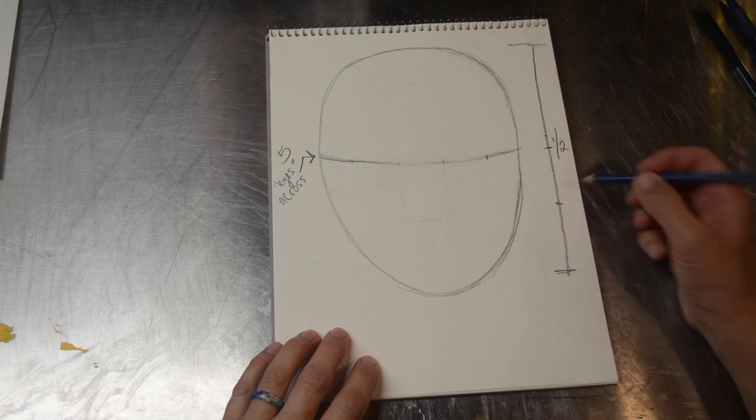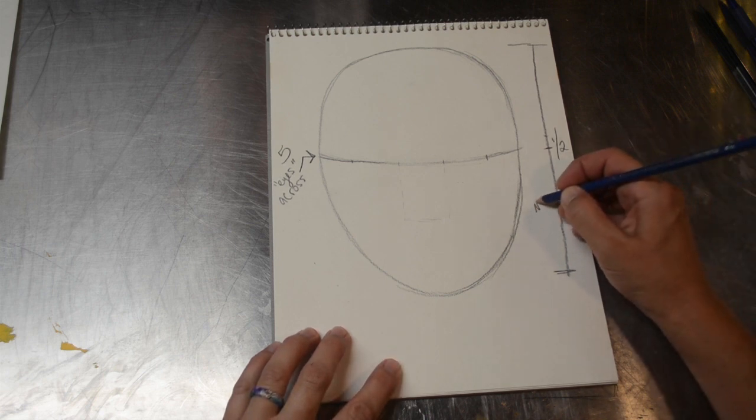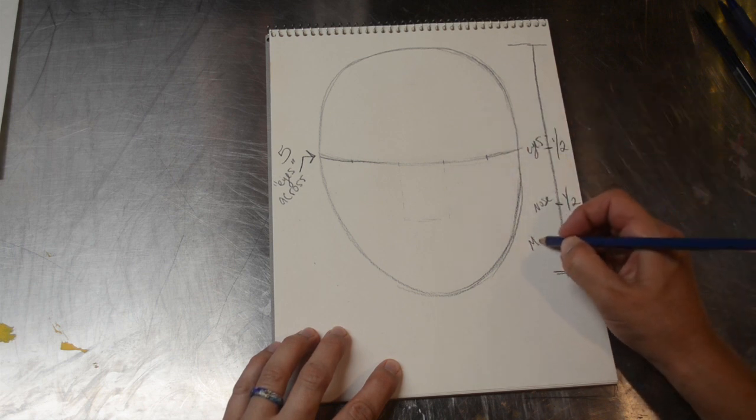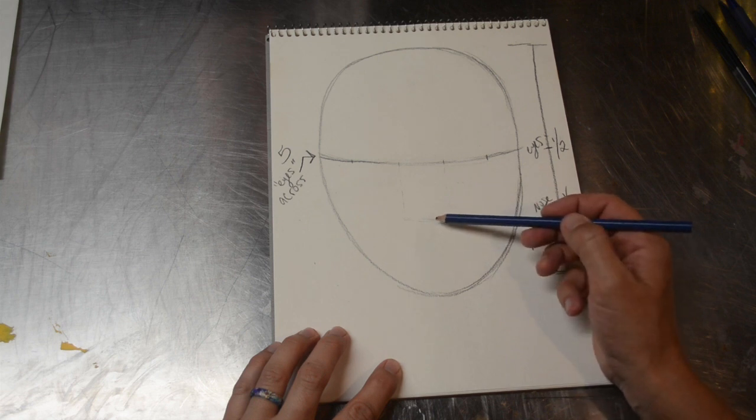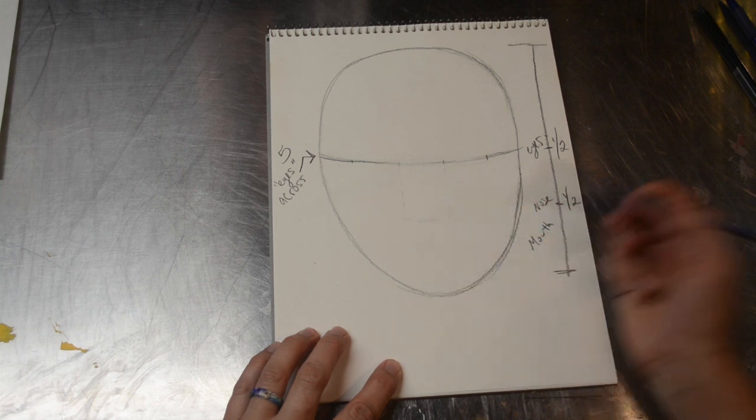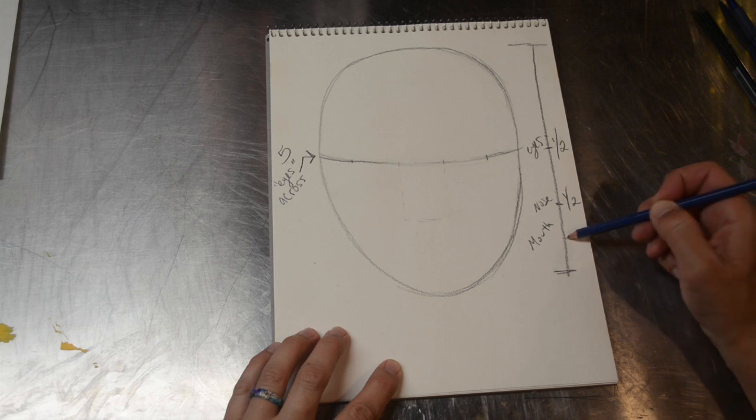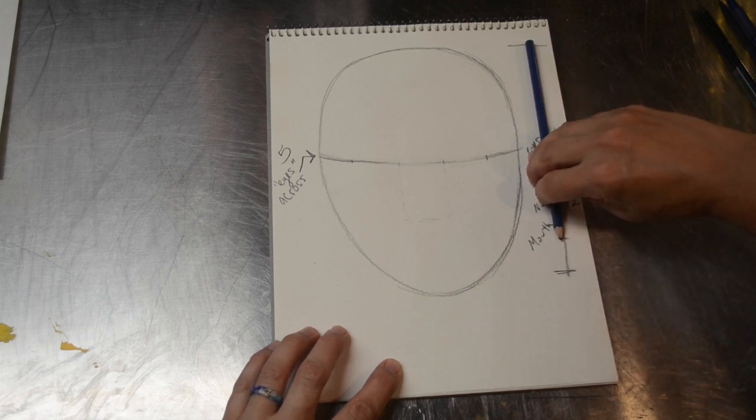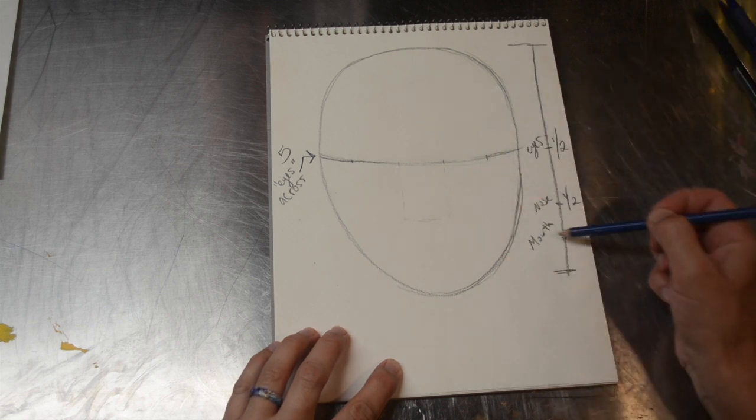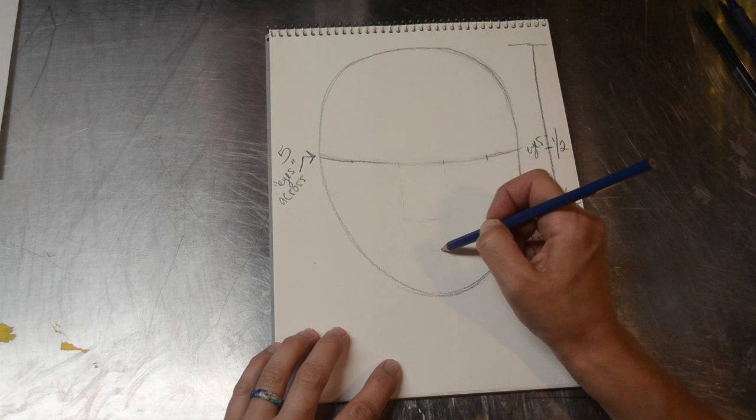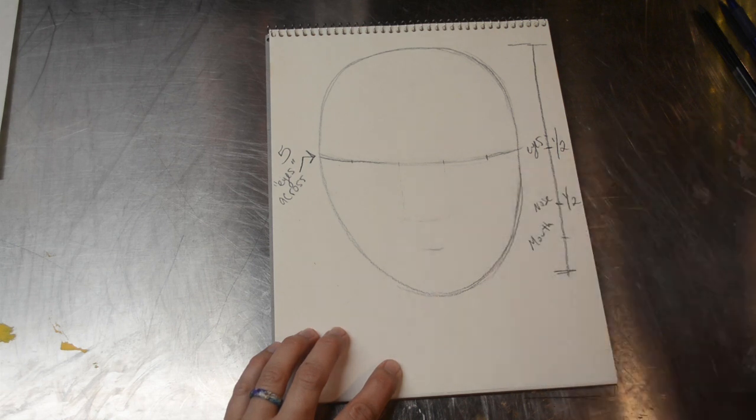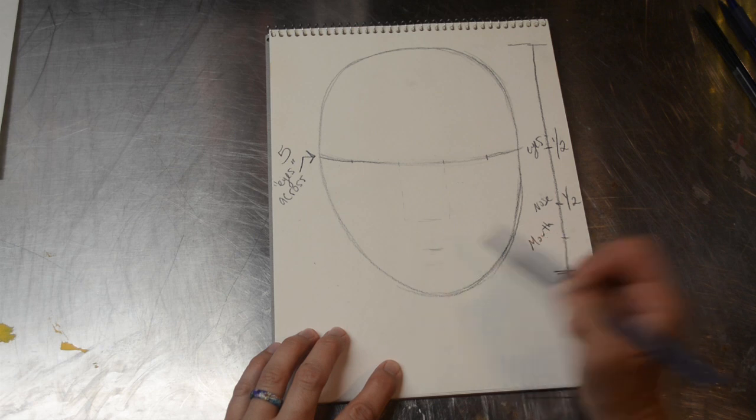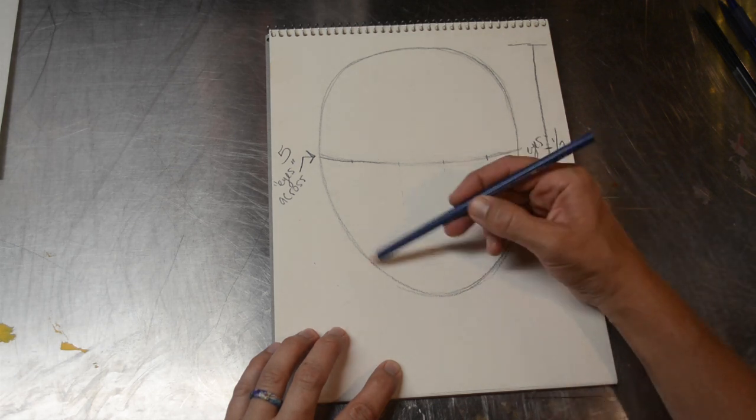And then the mouth, again, halfway. Half for the nose, eyes. So the mouth, about halfway between the lowest part and the chin. And that is where the lips meet. So you'll have your top lip above that mark and your bottom lip below that mark. And then you might adjust for the chin.